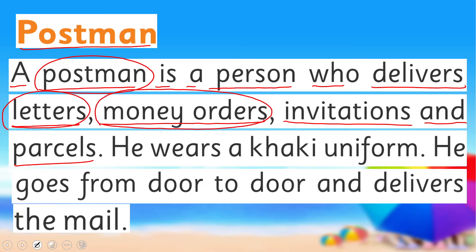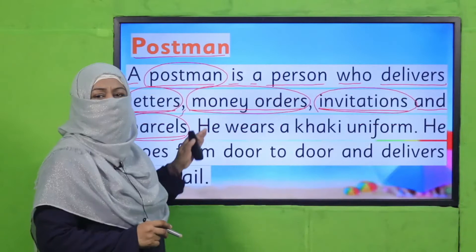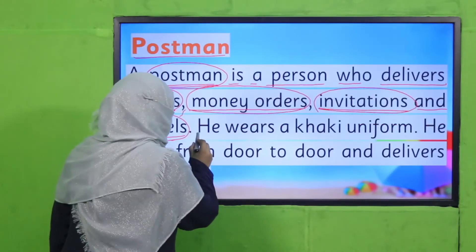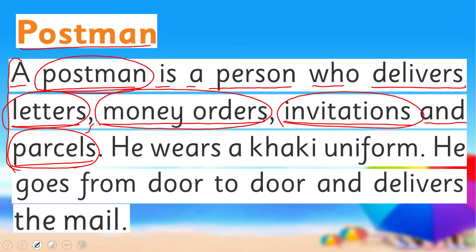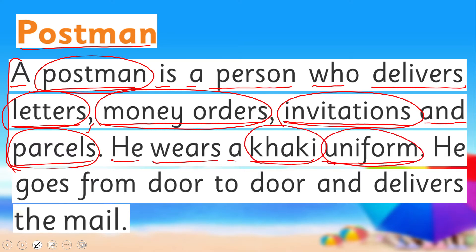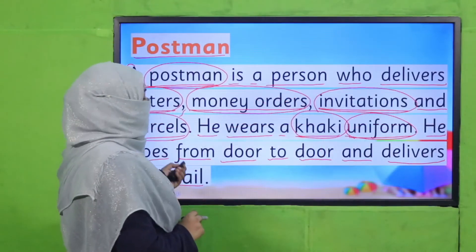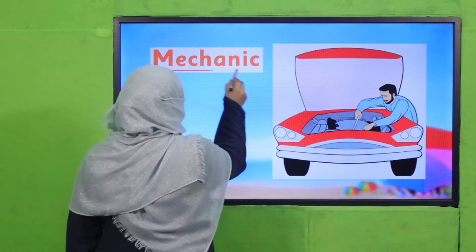What are money orders? When you send money from one place to another, that is called a money order. Invitations — if you want to invite a friend who lives in another city, you write an invitation. Parcels — if you want to send a gift or clothes, that is a parcel. So a postman delivers all these things. He wears a khaki uniform and goes from door to door delivering the mail.